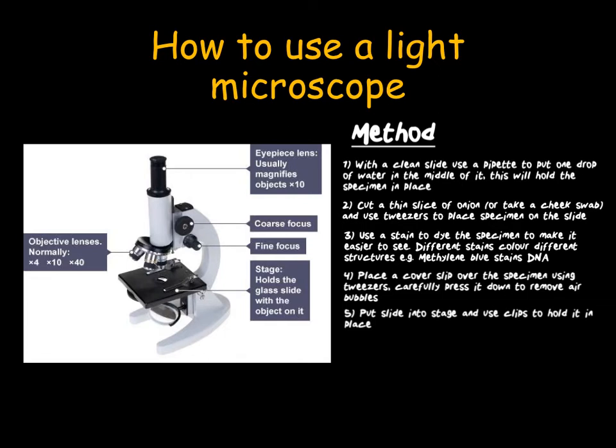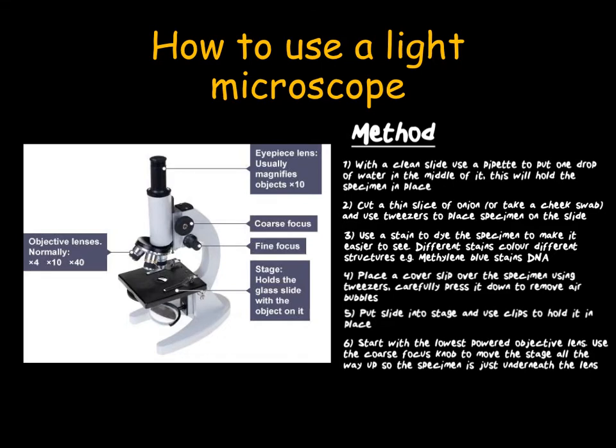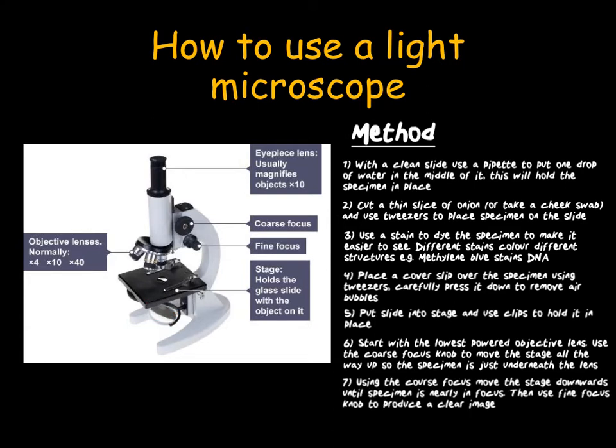We then place the slide onto the stage using the clips to secure it. You always start with the lowest powered objective lens, so we would have times four. We then use the coarse focus in order to move the stage up. This makes sure that the slide is just underneath the objective lens. We then look down through the eyepiece and, using the coarse focus, we move the stage downwards until it is nearly in focus. We can then adjust the focus again using the fine focus knob. This will make sure we have a clear image.